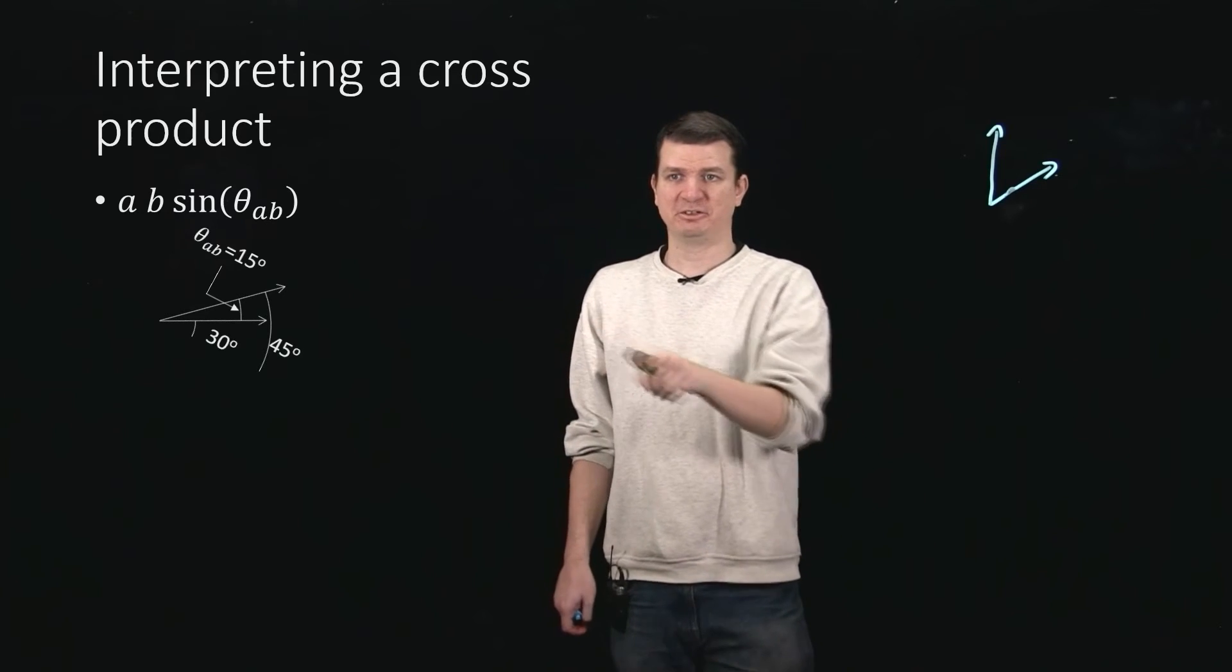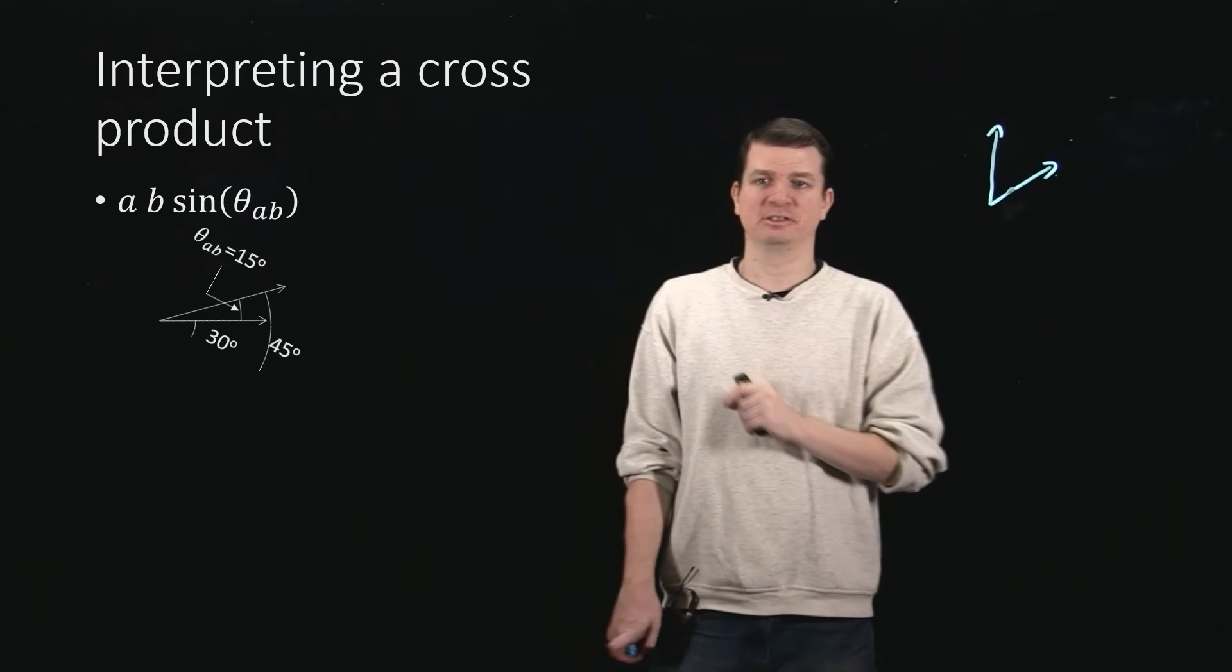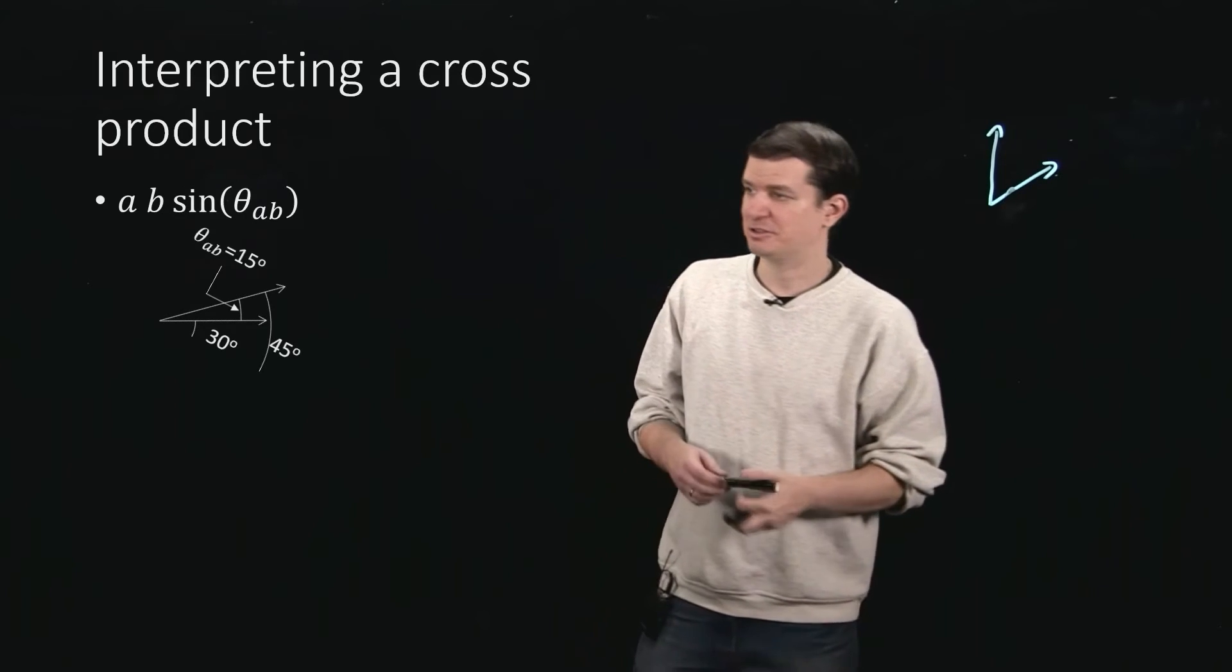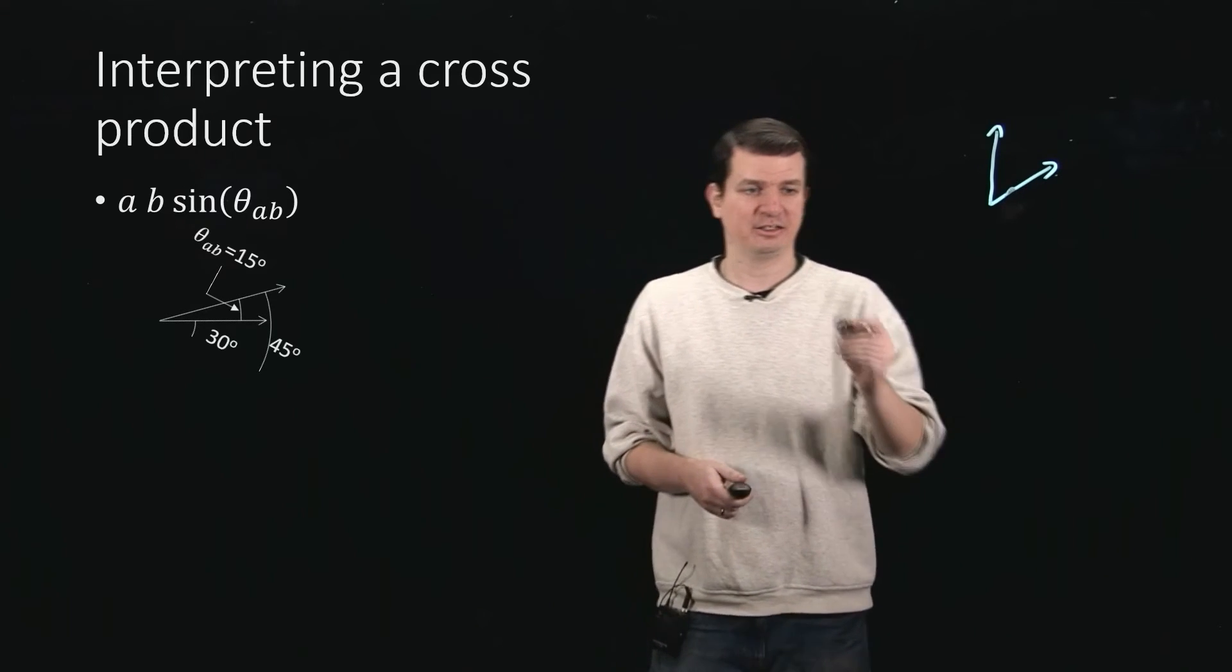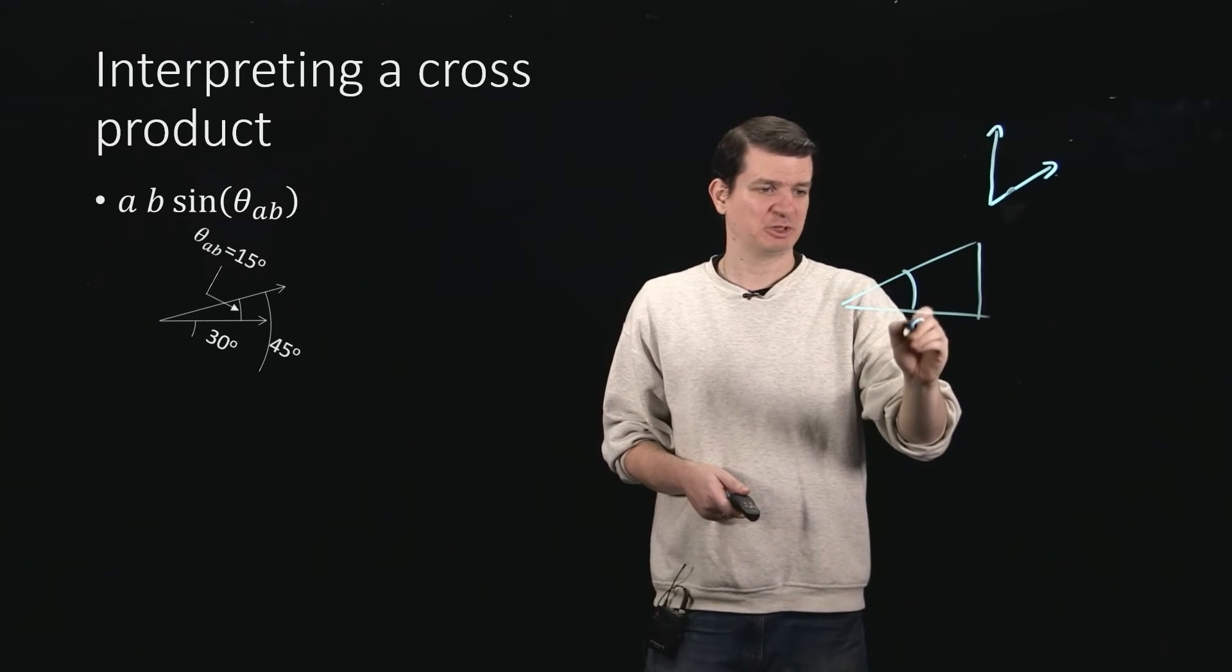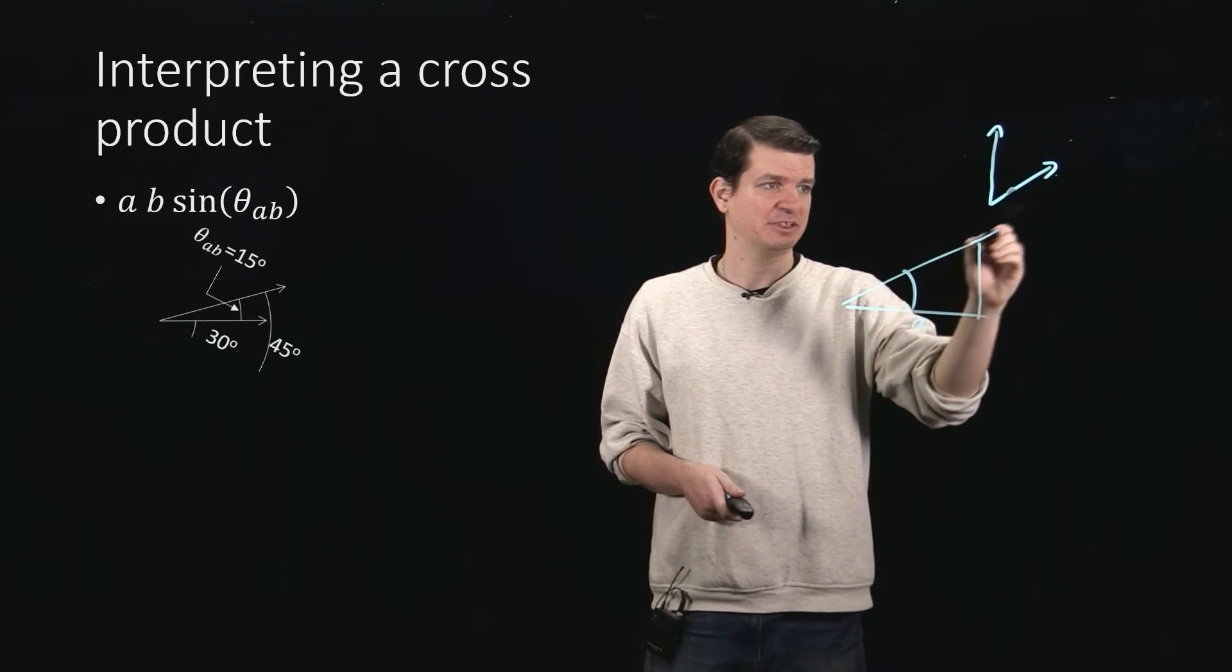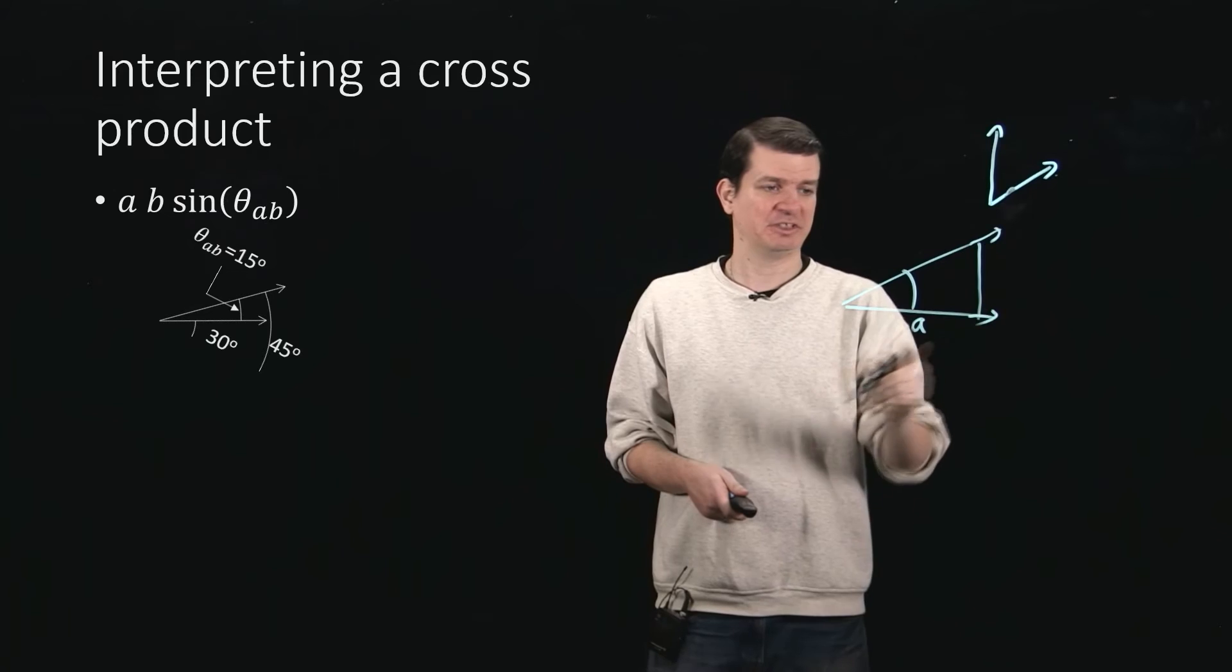So there's my angle. If I take the cosine, then I'm talking about the adjacent side. And that was giving me the projection of this vector onto the other vector.